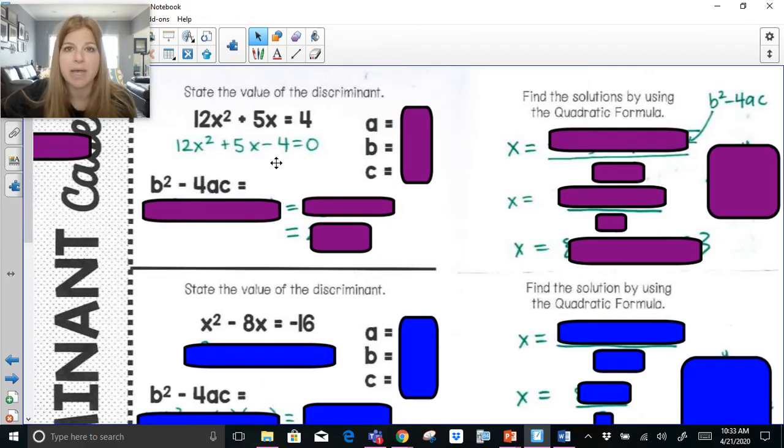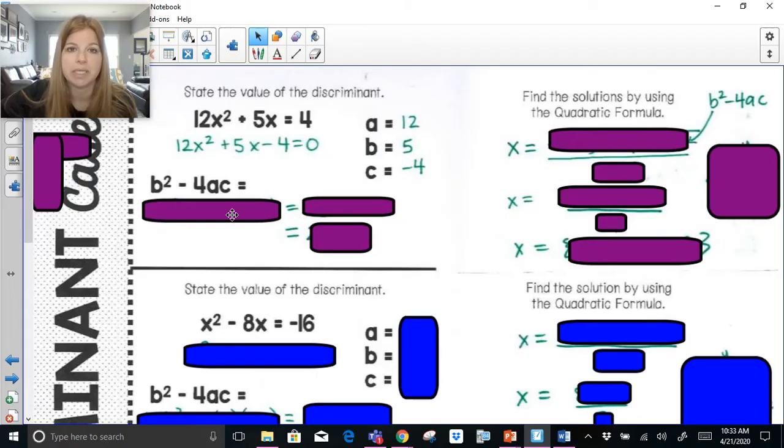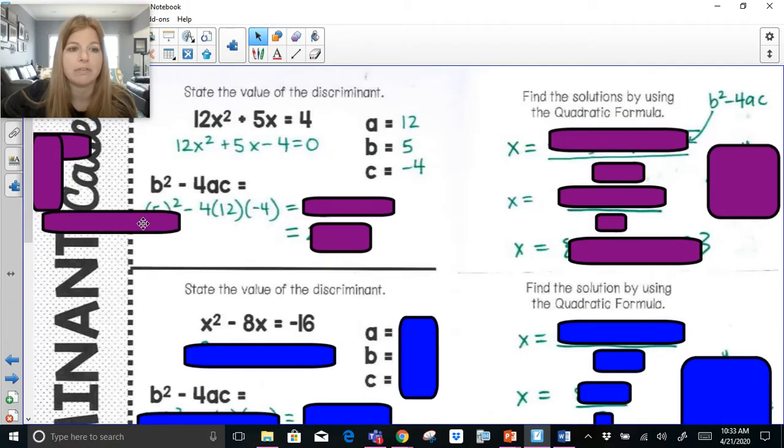When I have it set up that way, I can now properly see my values for a, b, and c. My a value is 12, my b value is 5, my c value is negative 4. Now my job is to substitute these values in for b squared minus 4ac. So 5 squared minus 4 times 12 times negative 4.